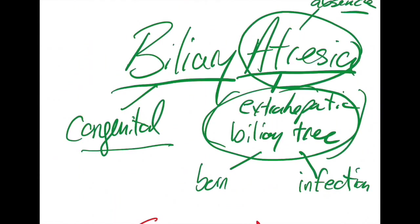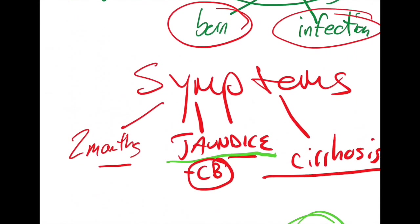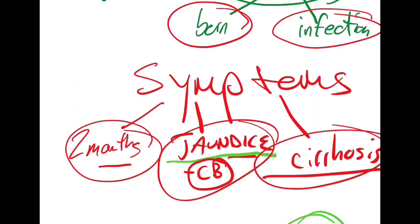So that's really all you need to know and we'll do a quick review. Biliary atresia. The absence of extrahepatic biliary tree. Symptoms happen right away in a newborn. You know it's congenital. You get jaundice and you can get liver cirrhosis.